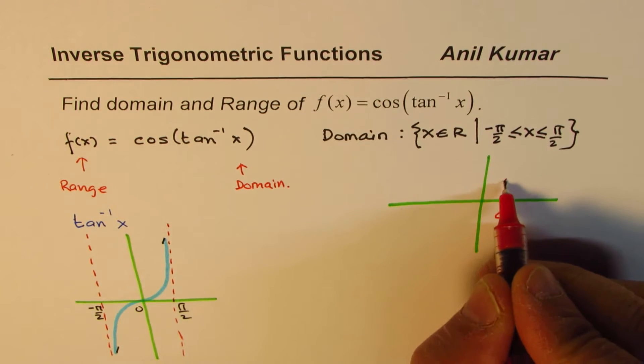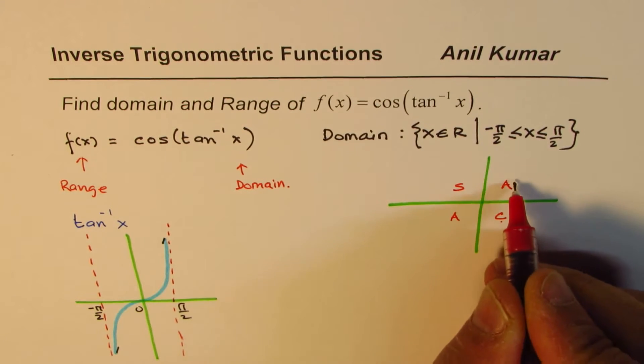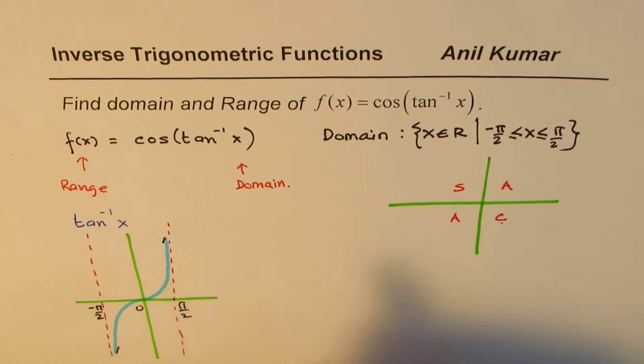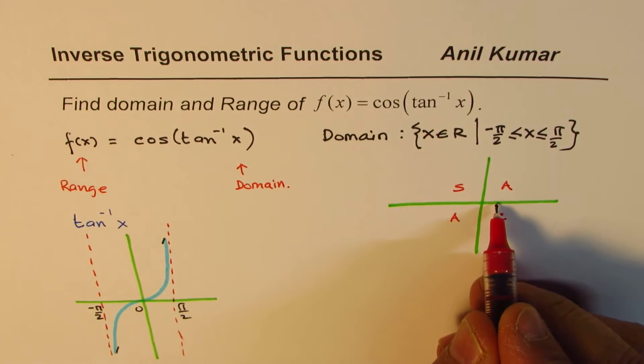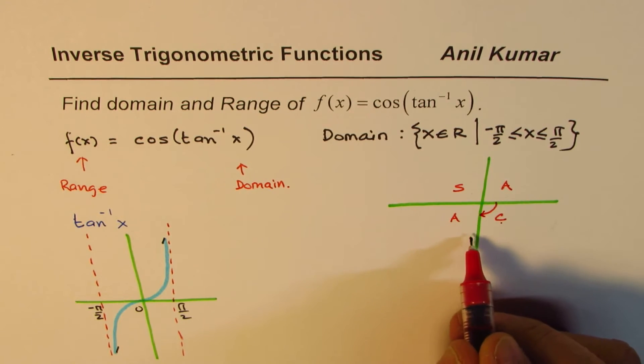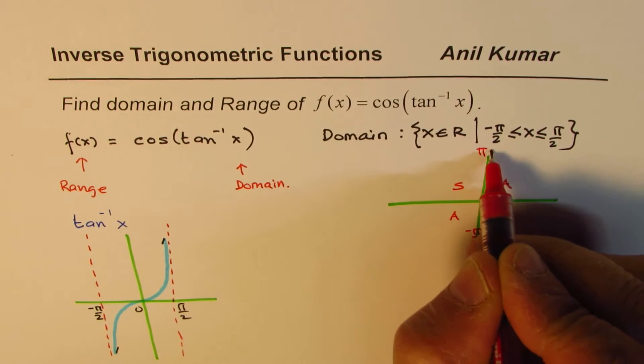As you know from the rule, we know in coordinate 4 and in coordinate 1, cosine is positive. Since the domain is from -π/2, so minus is the angle which you go clockwise. This is your -π/2, and that is +π/2.